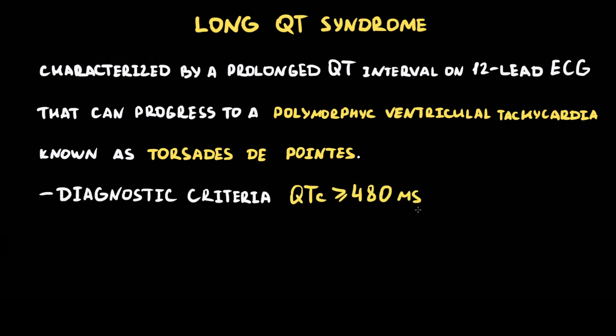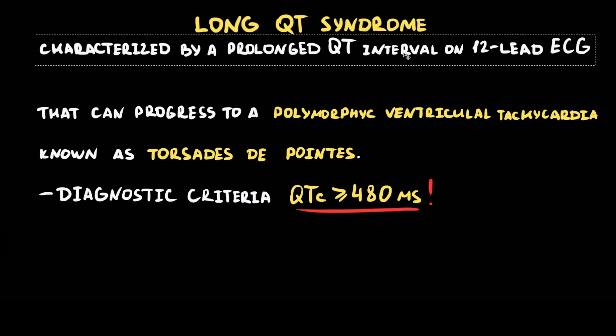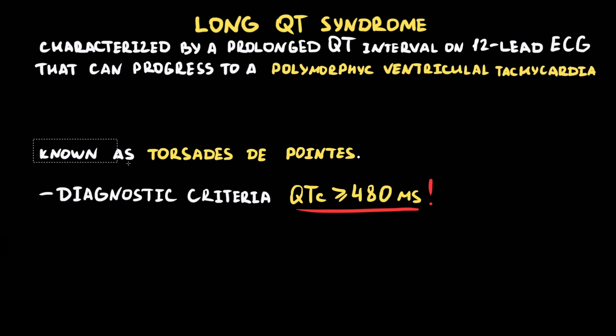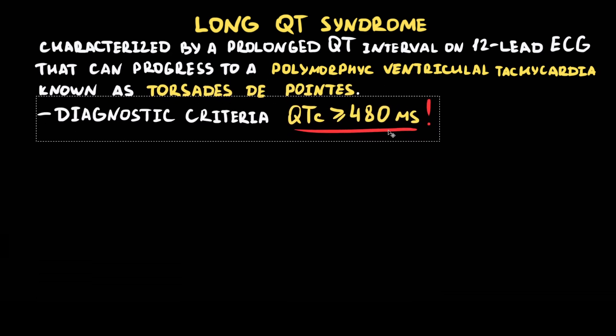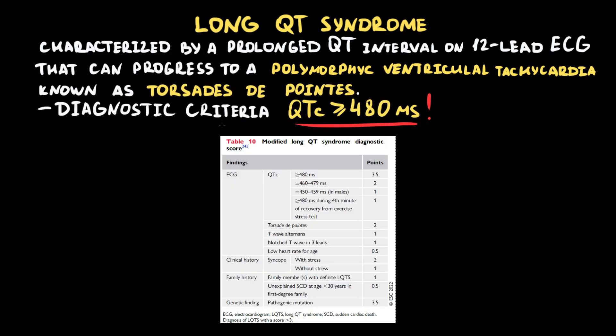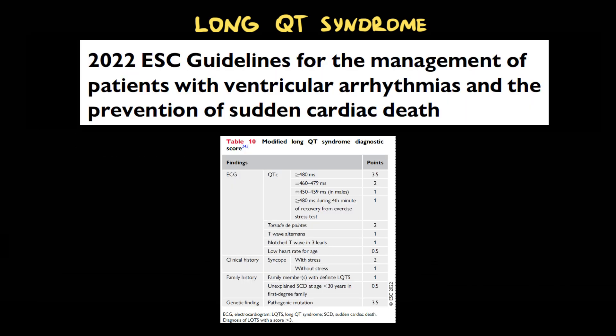The diagnostic criteria is a prolongation of corrected QT interval greater than or equal to 480 milliseconds, or a long QT syndrome risk score greater than or equal to 3 points.